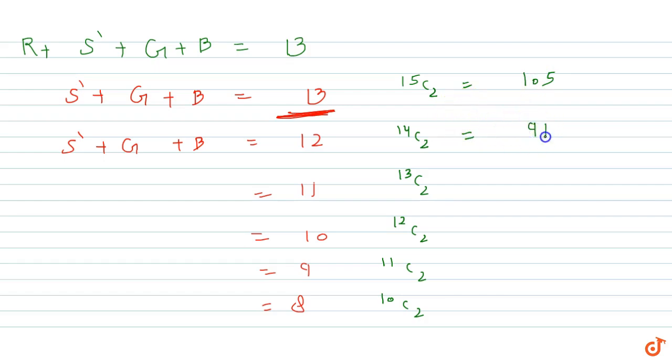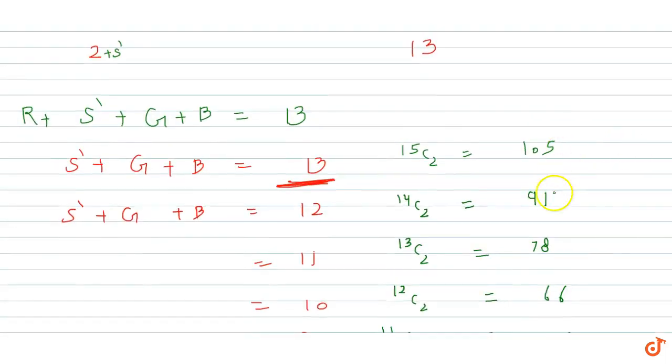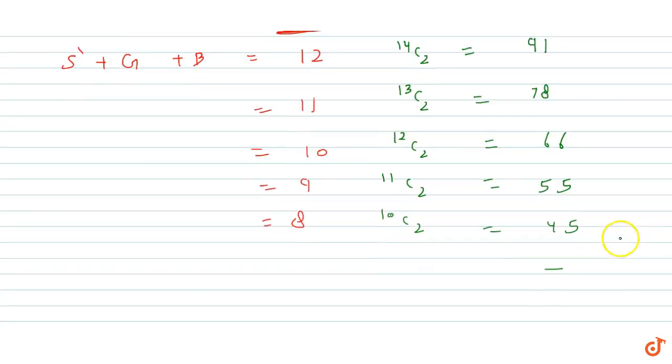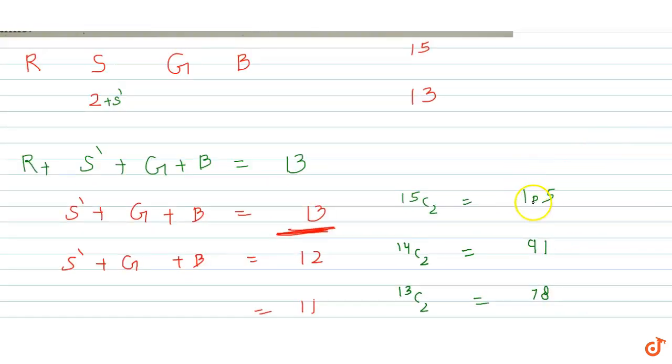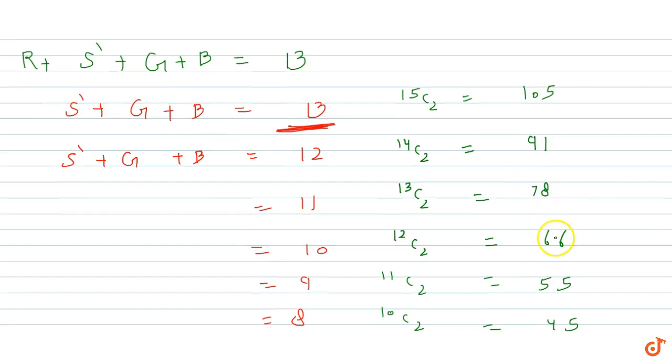Let me calculate the values. 15C2 equals 15 times 14 divided by 2, which equals 15 times 7, which is 105. 14C2 equals 13 times 7 which is 91. Then 13C2 equals 13 times 6 which equals 78.